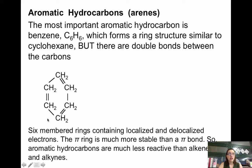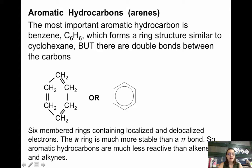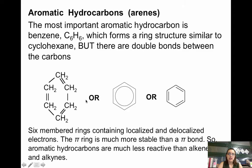This is what benzene looks like. If you want to do just the line structure, you can draw a hexagon, and a lot of times people will draw circles inside of it — that's because this is resonance. These double bonds could be moved to the single bond locations. These six-membered rings have both localized and delocalized electrons. All the sigma bonds are localized, but all the pi electrons can actually move around. This pi ring is much more stable than just a pi bond, so aromatic hydrocarbons are actually much less reactive than alkenes and alkynes. You could draw the hexagon with double bonds shown, or the condensed structure, or the line structure with a circle inside the hexagon, which represents resonance and delocalized electrons.